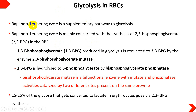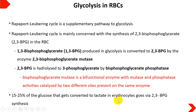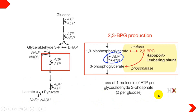This supplementary pathway to glycolysis — the Rapoport-Luebering Cycle — accounts for normally 15 to 25 percent of the glucose that gets converted to lactate in erythrocytes. So the deviation from the main pathway by formation of 2,3-BPG happens in 15 to 25 percent of cases in red blood cells, ultimately forming lactate via 2,3-bisphosphoglycerate.